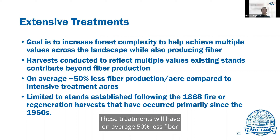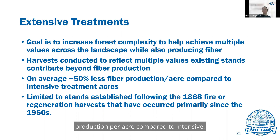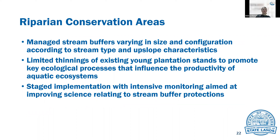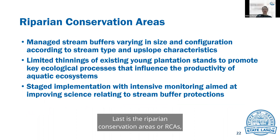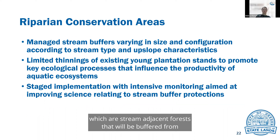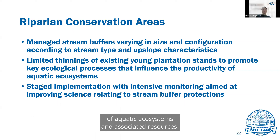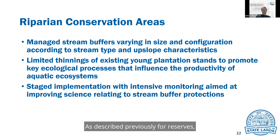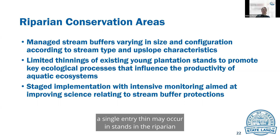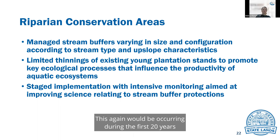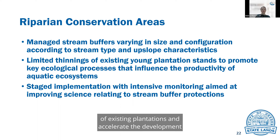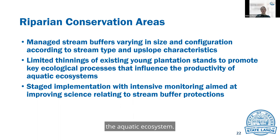Last are the riparian conservation areas, or RCAs, which are stream-adjacent forests that will be buffered from harvest. The focus of the riparian approach is on maintaining key ecological processes that influence the productivity of aquatic ecosystems and associated resources. As described previously for reserves, a single-entry thin may occur in stands in the riparian conservation areas that are less than 65 years old as of 2020. This again would occur during the first 20 years of the permit term, with the goal to reduce the density of existing plantations and accelerate the development of forest conditions that would benefit the aquatic ecosystem.